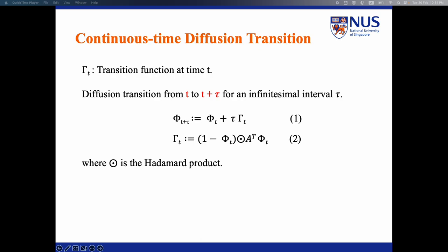Phi t plus tau equals to phi t plus tau times gamma t, where gamma t can be calculated as 1 minus phi t, Hadamard product A transpose phi t.